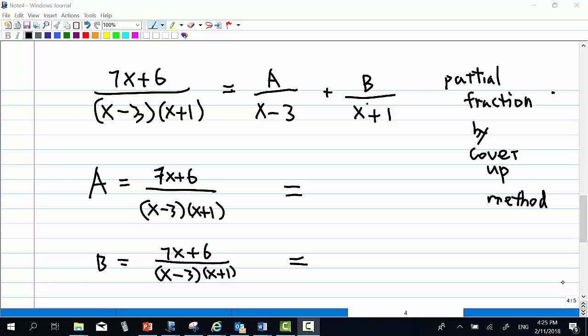We can now apply partial fraction to 7x plus 6 over x minus 3 times x plus 1. Notice that you must factorize the denominator completely. Now since both the factors in the denominator are linear factors of degree 1, so you split the partial fraction into A over x minus 3 plus B over x plus 1. So what is A, what is B now? This method is called cover up method. It's very fast.